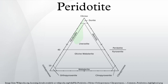Other masses of peridotite have been emplaced into mountain belts as solid masses but do not appear to be related to ophiolites, and they have been called orogenic peridotite massifs and alpine peridotites. Peridotites also occur as fragments carried up by magmas from the mantle. Among the rocks that commonly include peridotite xenoliths are basalt and kimberlite. Certain volcanic rocks, sometimes called komatiites, are so rich in olivine and pyroxene that they also can be termed peridotite.